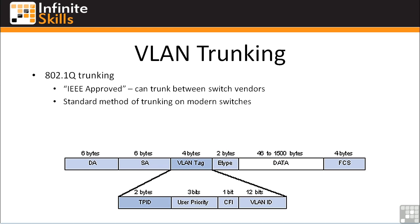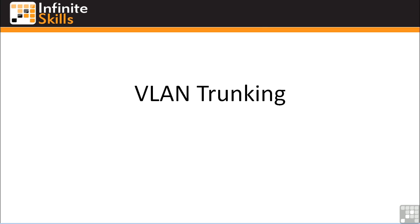It doesn't have to remove a frame header or footer or recompute a checksum again before placing it on the destination VLAN. It's a much cleaner implementation. If you want to examine an Ethernet frame using 802.1Q trunking, you have direct access to the destination and source addresses right in the Ethernet frame — you don't have to crack open an ISL encapsulation to get at the actual Ethernet data. And that concludes our discussion of VLAN trunking.